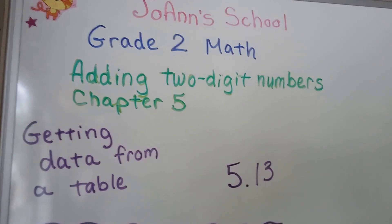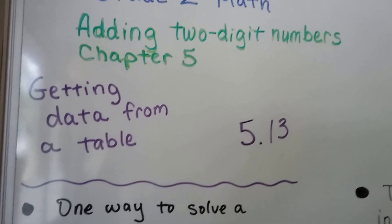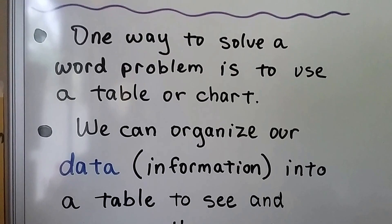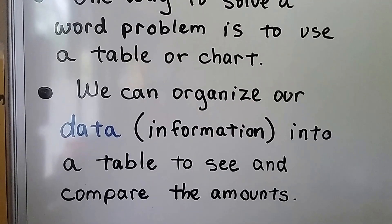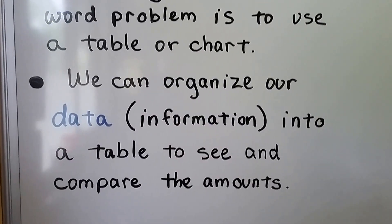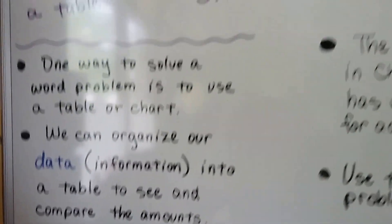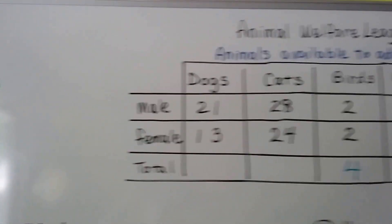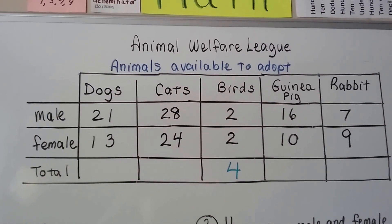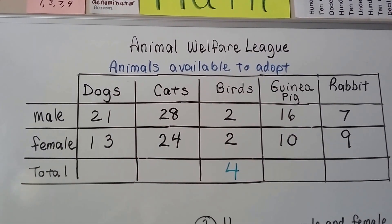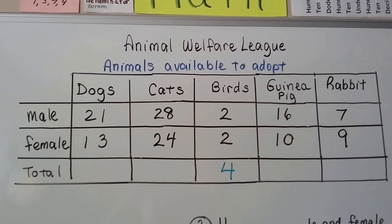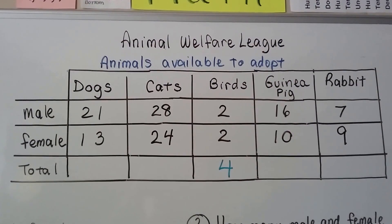Getting data from a table, lesson 5.13. One way to solve a word problem is to use a table or chart. We can organize our data — that's our information — into a table to see and compare the amounts. It'll make it easier to see everything. We have a chart here: this is my favorite animal shelter, the Animal Welfare League, a no-kill shelter. This is a table of all the animals they have available to adopt, so let's take a good close look at it first.